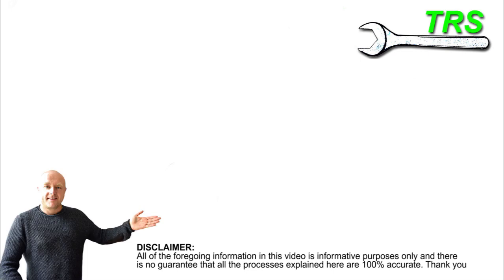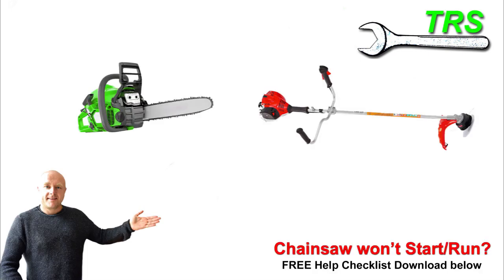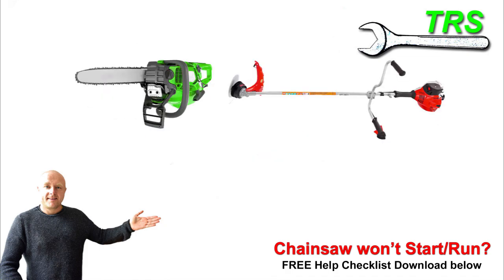Hello, welcome. In this video I'm going to explain to you why a two-stroke engine such as a chainsaw or a strimmer can work vertical, horizontal and upside down.